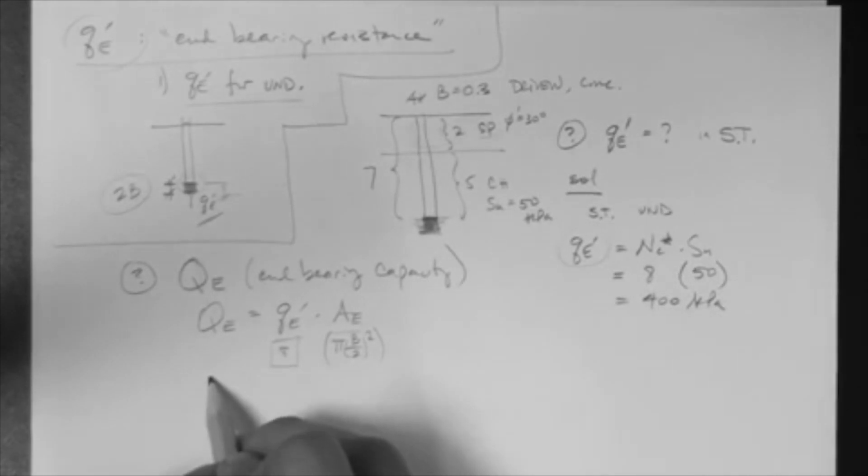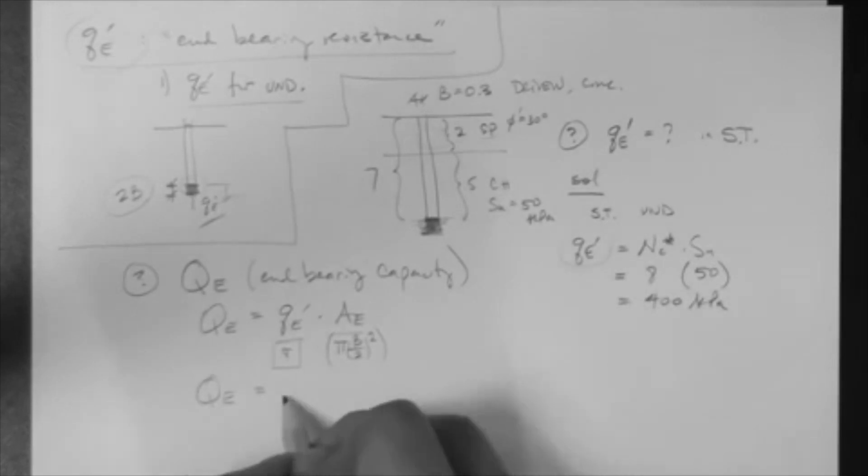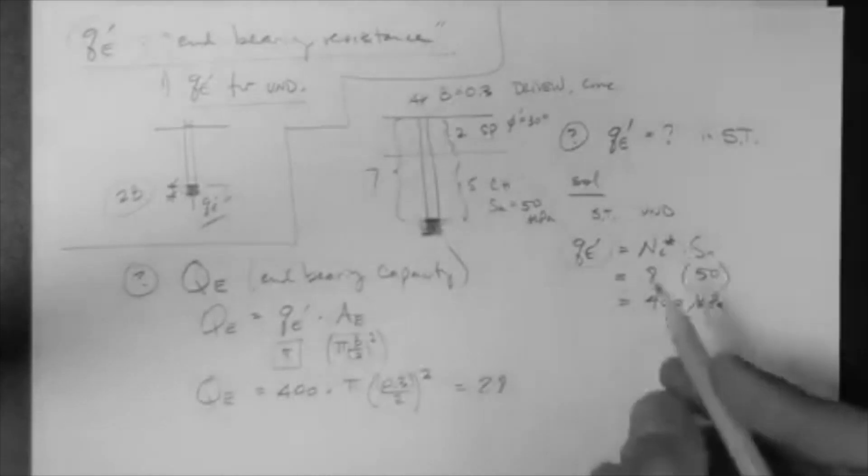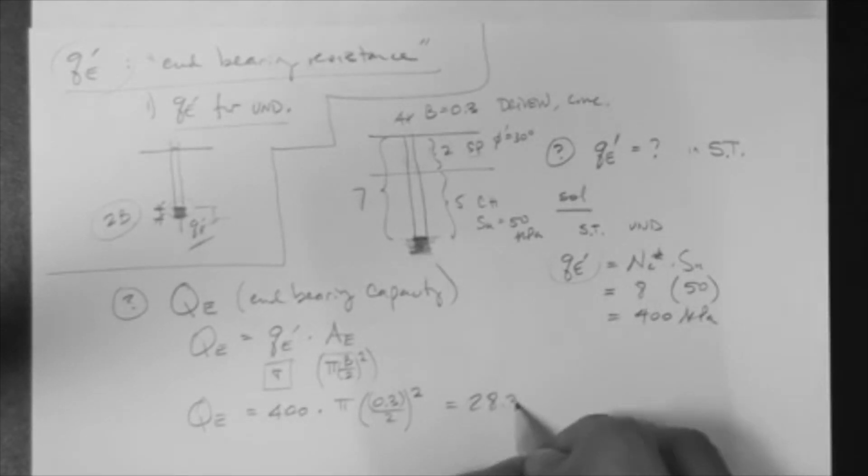So, for our example, Qe is equal to Qe' 400 times Ae, which is π·(0.3/2)², which is the radius squared, and what's this?